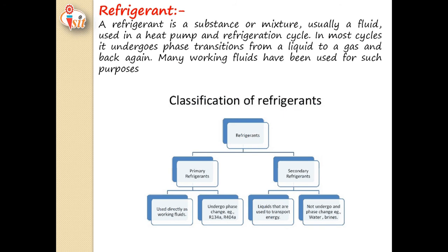Refrigerants are classified as primary refrigerants and secondary refrigerants. Primary refrigerants are classified into two categories: in the first category they are used directly as working fluids, and in the second they undergo phase change — for example, R134a and R404a. Similarly, secondary refrigerants are classified into two categories: liquids used to transport energy, and liquids which do not undergo phase change — for example, water and brine solution.